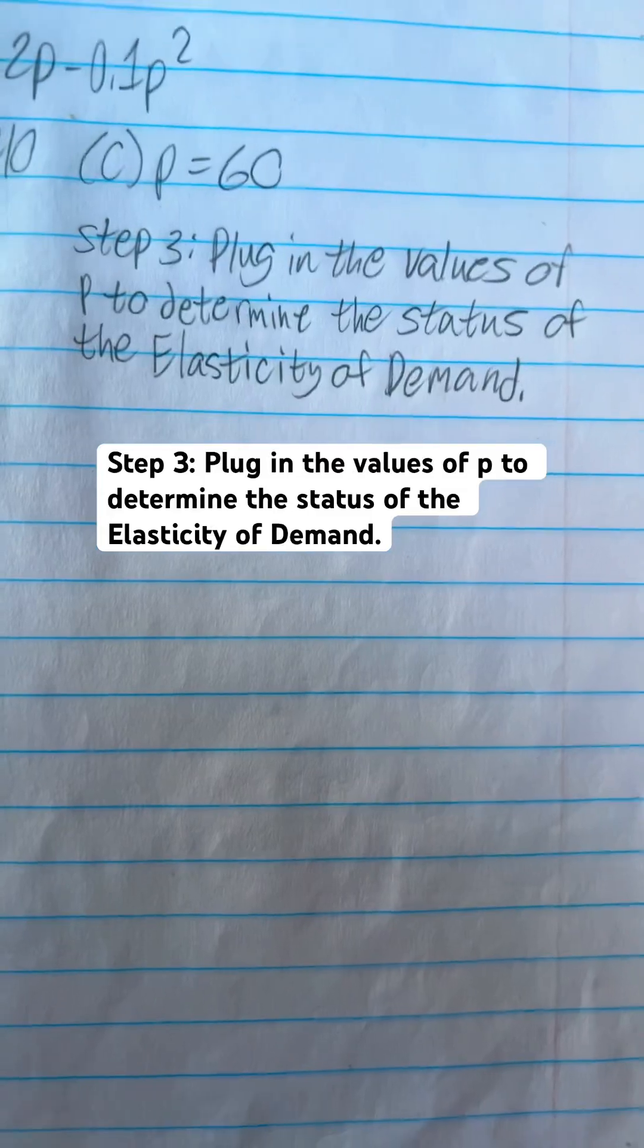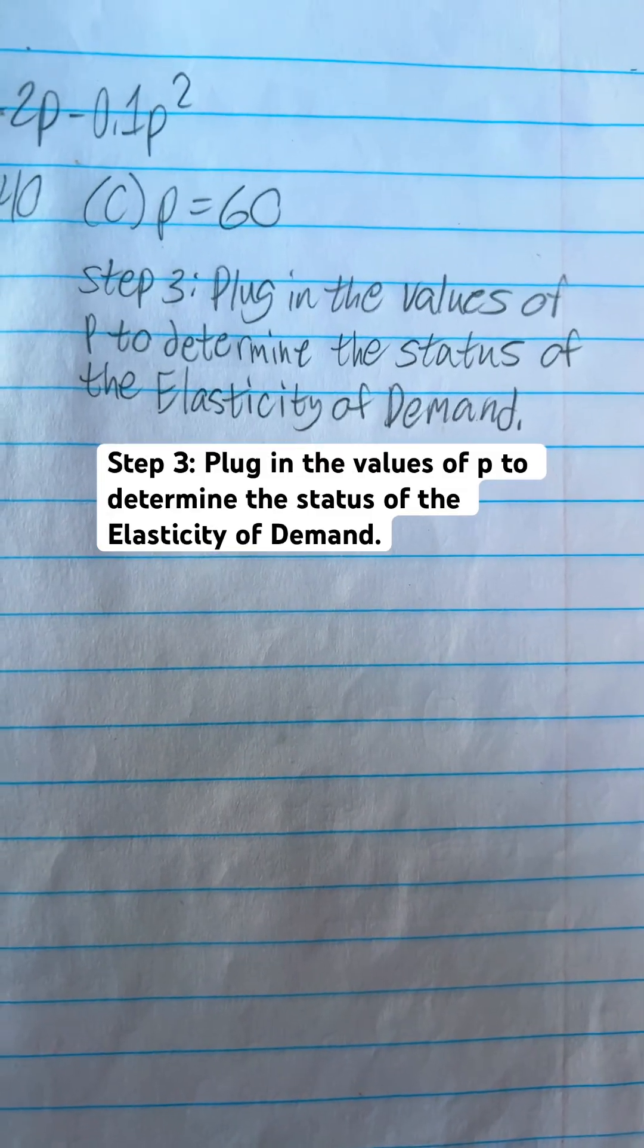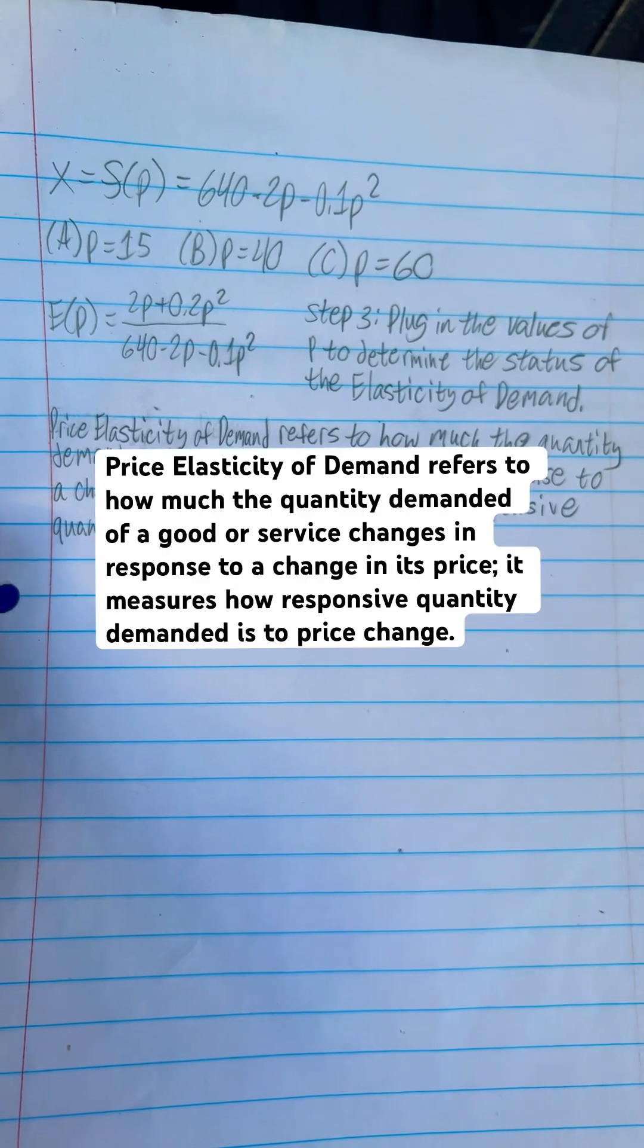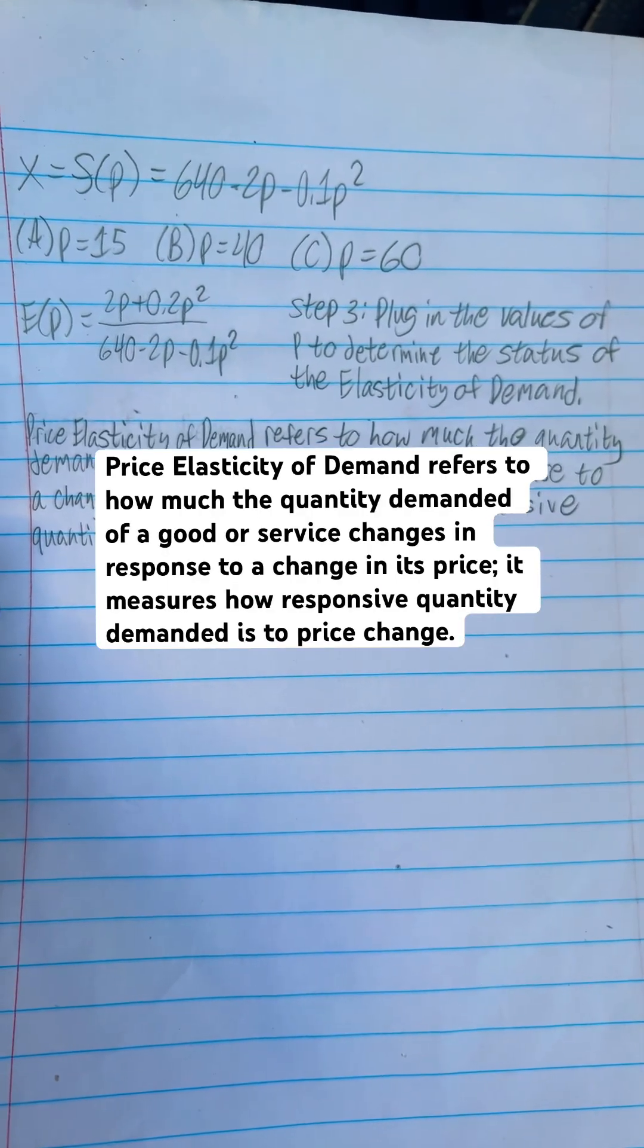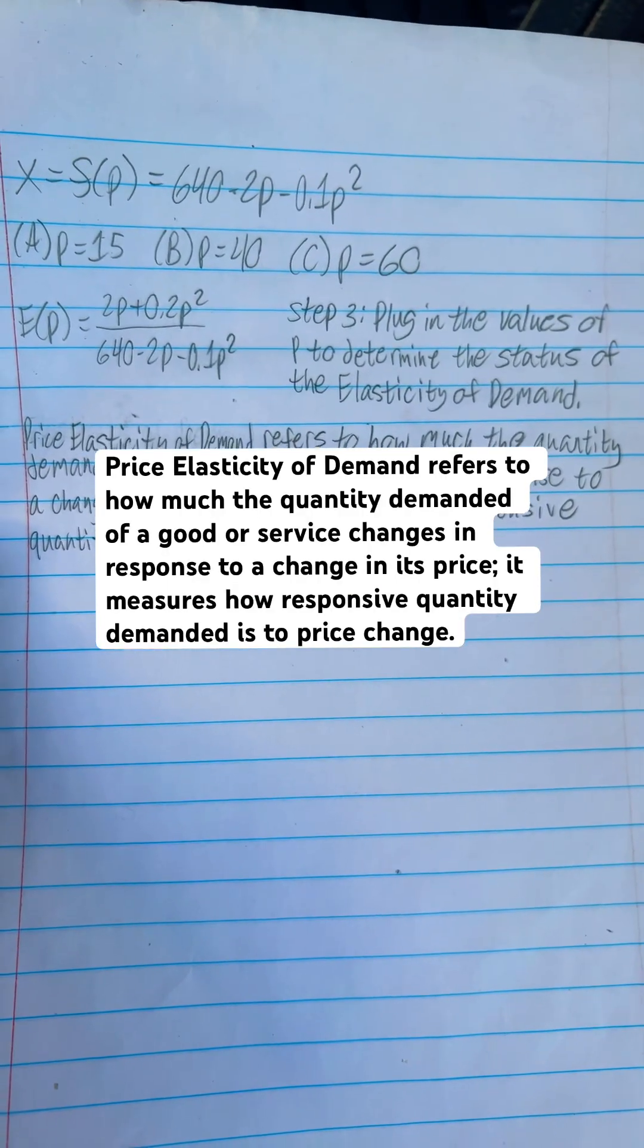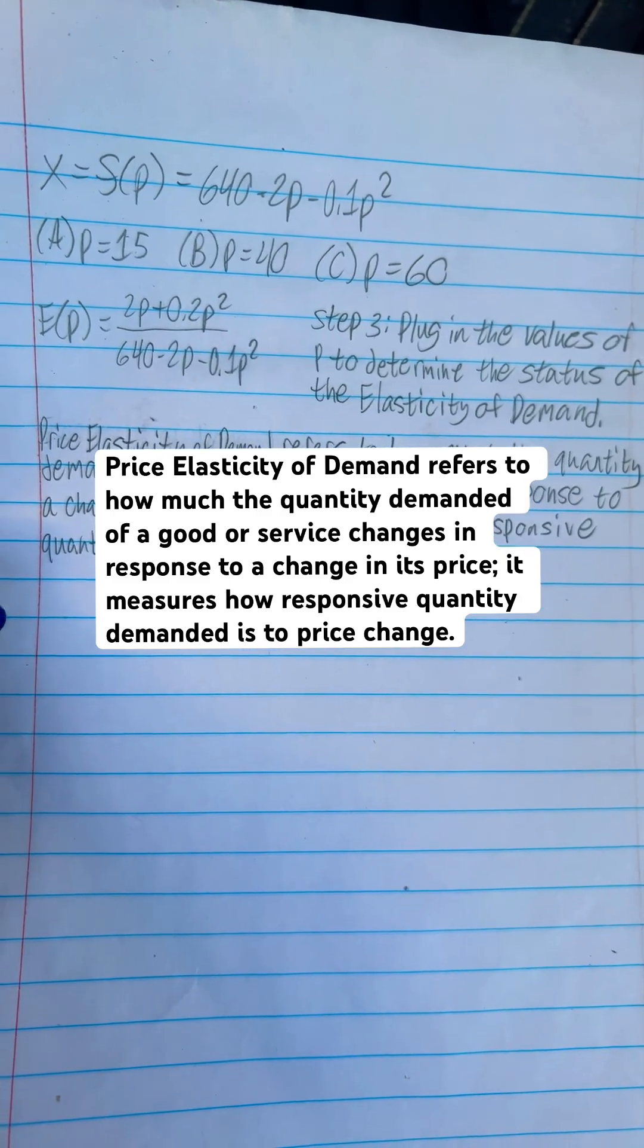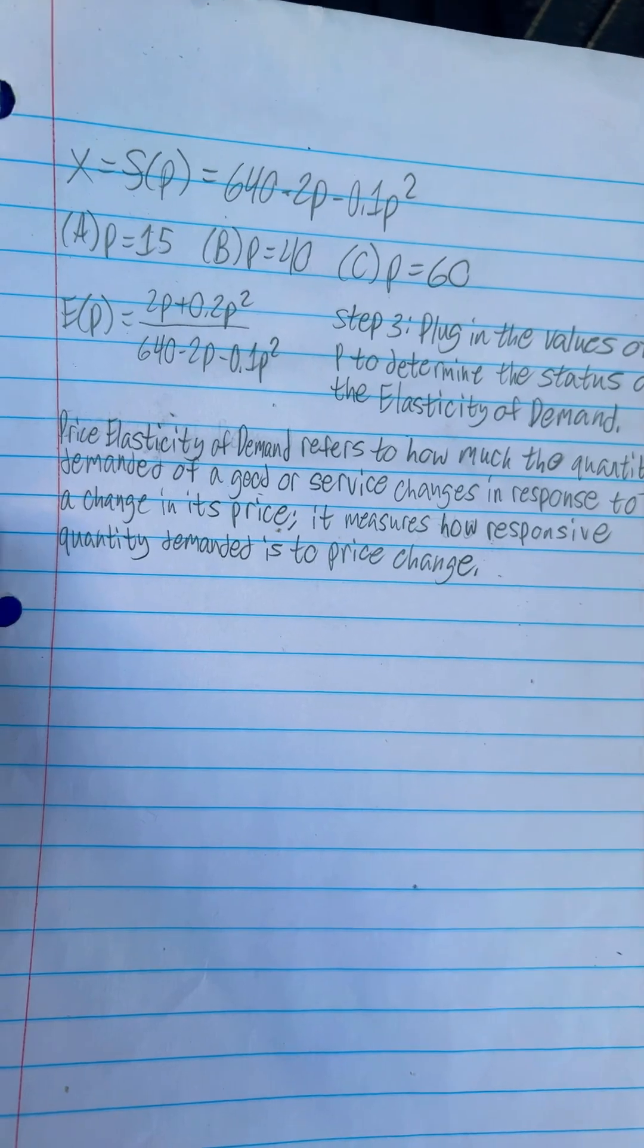Step 3 is to plug in the values of P to determine the status of the elasticity of demand. By the way, price elasticity of demand refers to how much the quantity demanded of a good or service changes in response to a change in its price. It measures how responsive quantity demanded is to price change.